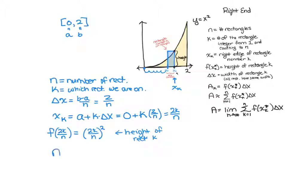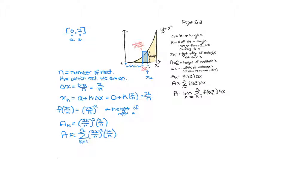So to find the area of rectangle k, we're going to take that height and multiply it by the width. So now the total area is approximately the sum starting at the first rectangle and ending at the last rectangle of all of these areas.